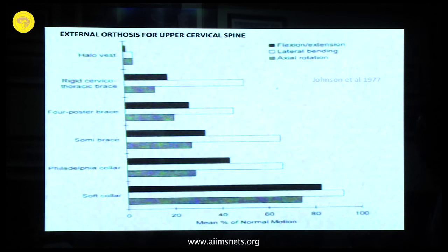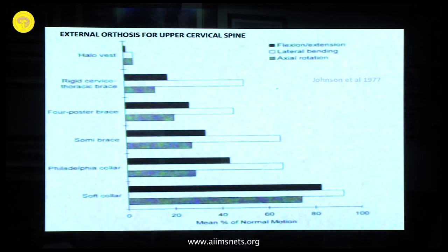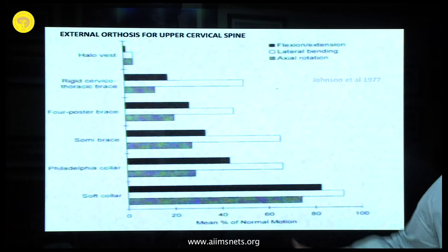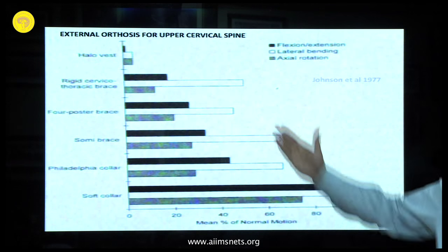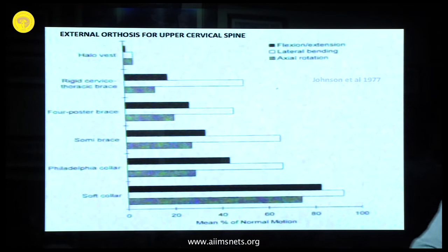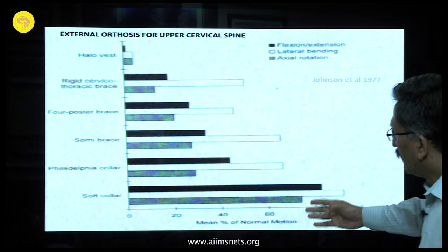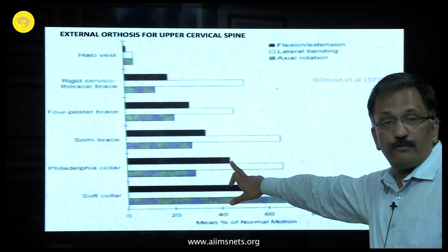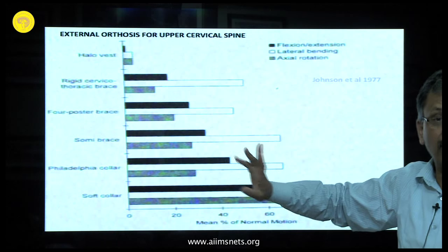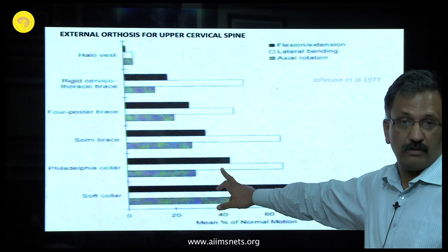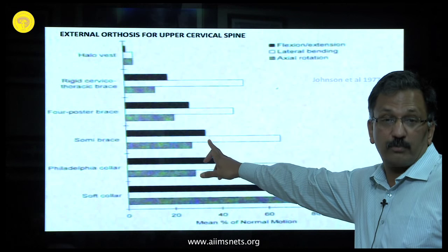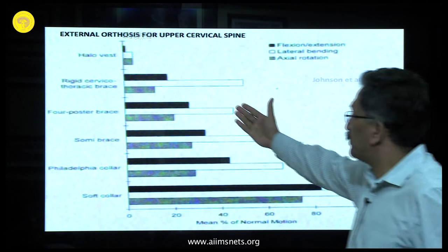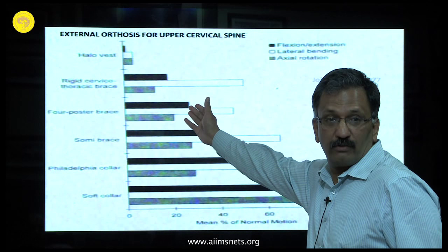Regarding immobilization: in 1977, Jackson looked at all external orthoses and the degrees of freedom of movement each permits despite placement. Surprisingly, a Philadelphia collar still allows almost 45 degrees of movement. A sterno-occipitomandibular brace still provides about 40 percent of movements. A four-poster brace also still provides significant movement. So the only truly restrictive immobilization options are limited.